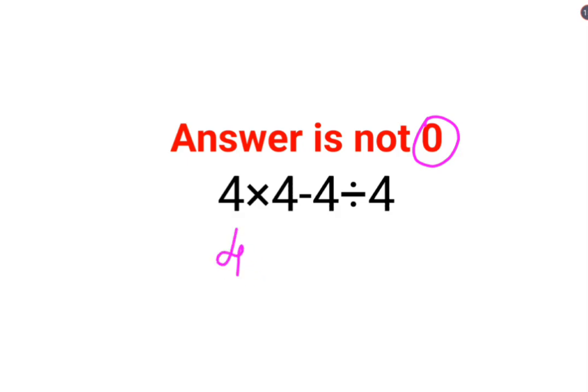We have 4 multiplied by 4 minus 4 divided by 4. If you incorrectly do 4 minus 4 first, you get 0 divided by 4. So 4 multiplied by 0 is 0 divided by 4. When you divide 0 by any number, the answer is 0. That reasoning is actually okay.